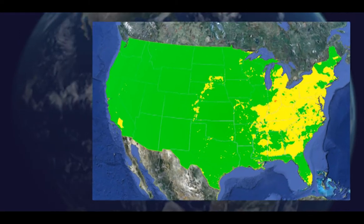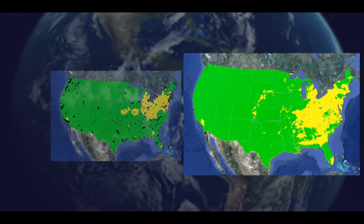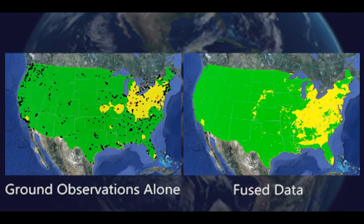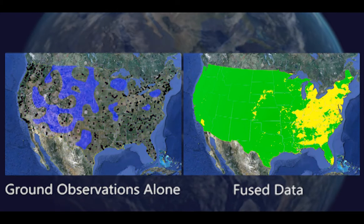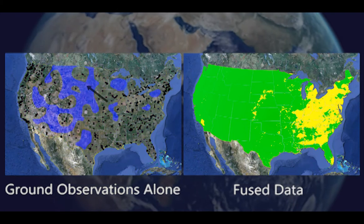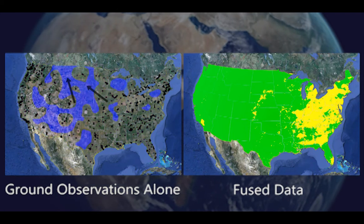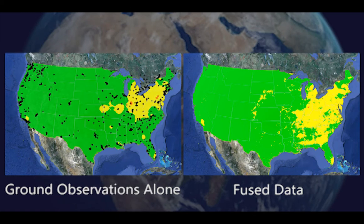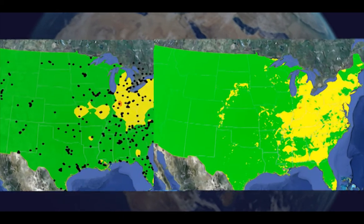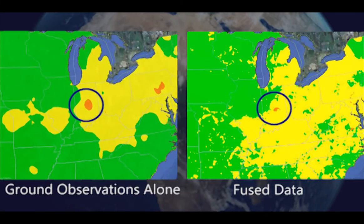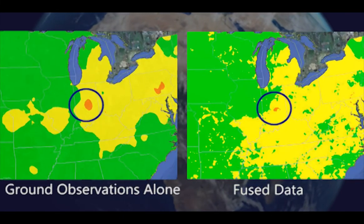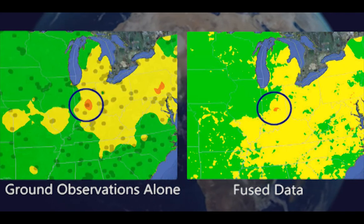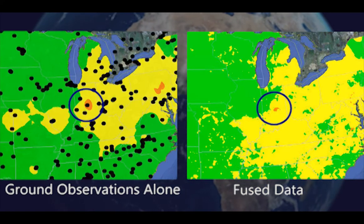By incorporating satellite estimations of ground-level pollution, we add information in regions without monitors, like South Dakota and Montana. In addition, we can limit the spatial influence of isolated ground monitors by providing pollutant information in the region immediately surrounding the monitor.